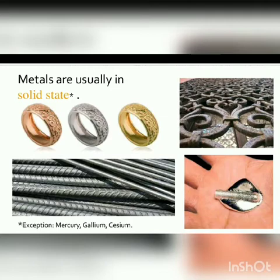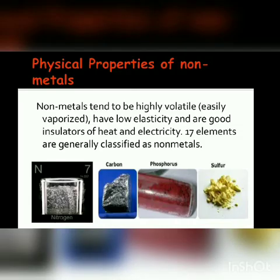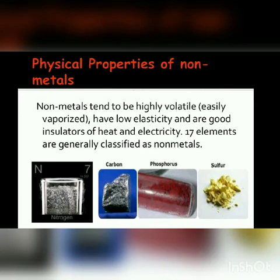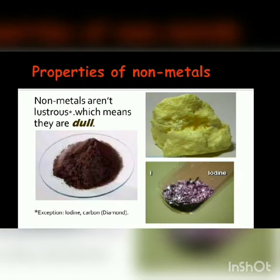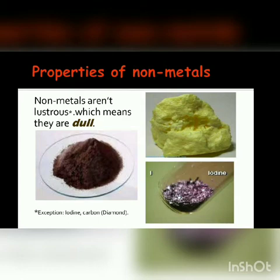Now, the physical properties of non-metals. Examples of non-metals include carbon, nitrogen, oxygen, fluorine, neon, and helium. Non-metals tend to be highly volatile — they easily vaporize — have low elasticity, and are good insulators of heat and electricity. There are 17 elements classified as non-metals. The first property is that they are dull — they do not have a shiny texture and are not lustrous.